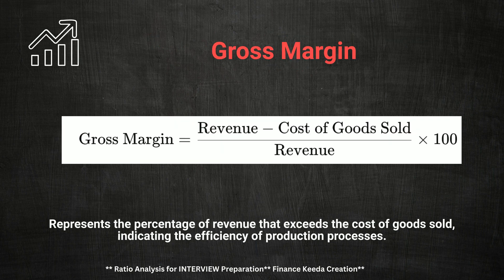Now let's touch upon Gross Margin, an essential profitability metric. Gross Margin is calculated as Gross Profit divided by Revenue, expressed as a percentage. In interviews, you might be asked: what does a declining Gross Margin suggest? A declining Gross Margin could indicate rising costs of goods sold or decreased pricing power, both of which can impact a company's profitability. Conversely, an increasing Gross Margin can signal improved efficiency or a stronger competitive position. Understanding the factors that influence Gross Margin will enable you to provide deeper insights during discussions.